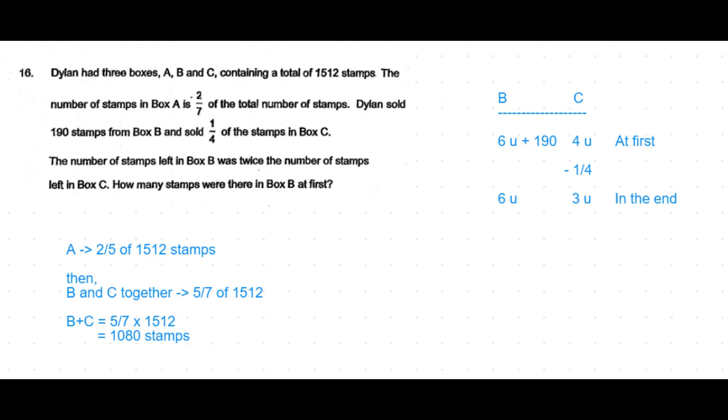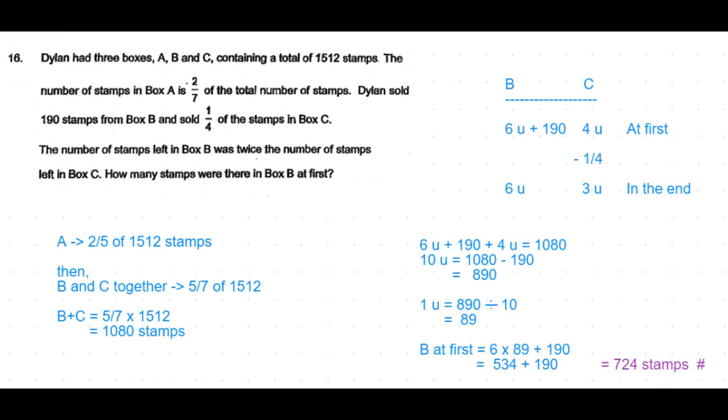So 6 units + 190 + 4 units equals 1080 stamps.